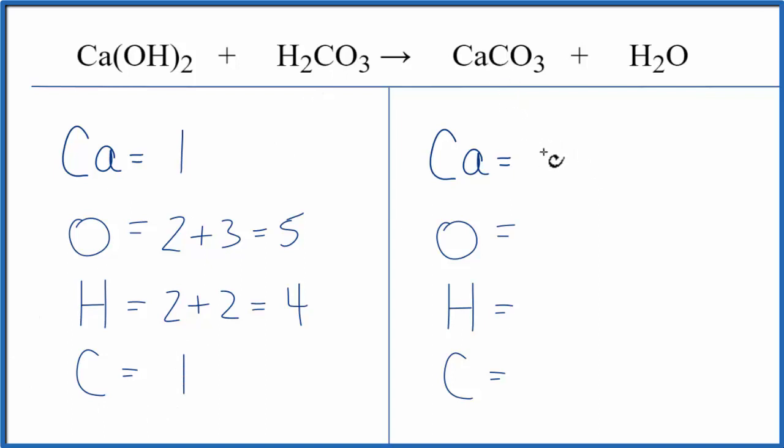On the product side, 1 calcium. Oxygens, we have 3 plus the 1. That gives us 4. Hydrogens 2, and then carbons, we have just 1.